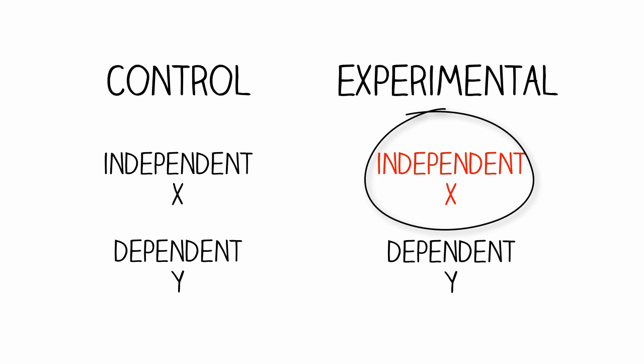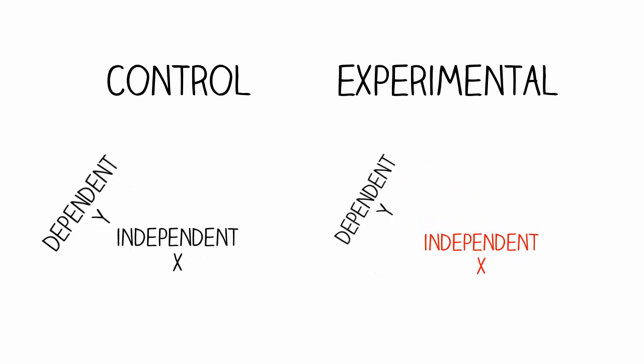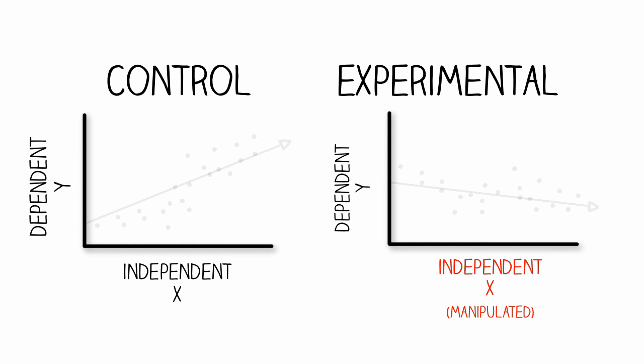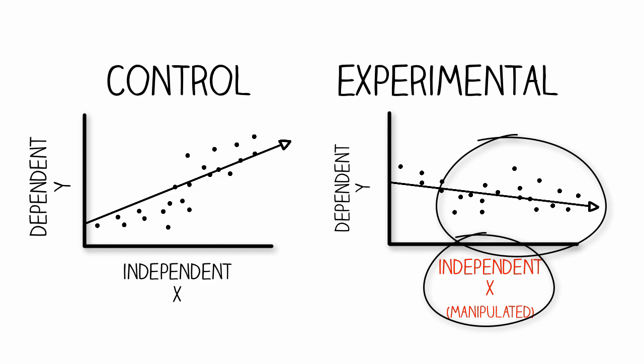In both conditions, we measure the dependent variable to determine if there's a difference in observed outcomes. As you can see, the outcome of variable Y is dependent on variable X, because as we manipulated X, the outcome Y was affected.